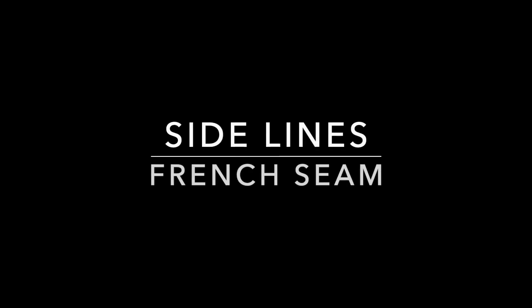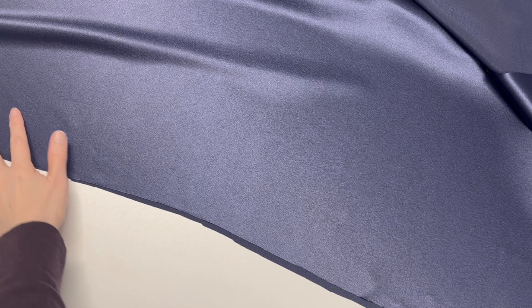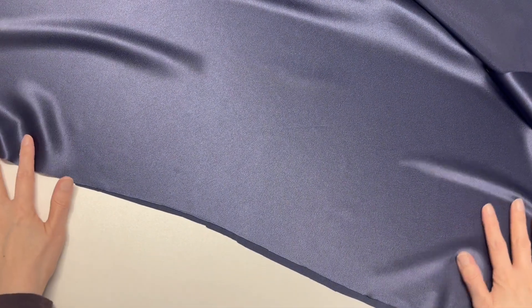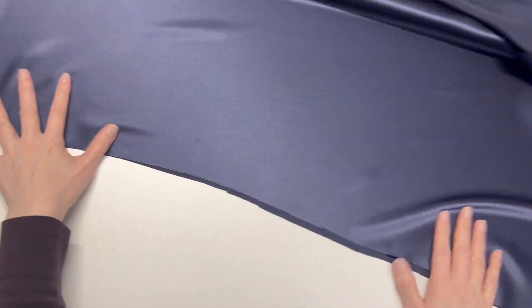Let's sew side lines first. With wrong sides together, do a straight stitch. Sew a seam at 1 1⁄4 inch seam allowance.